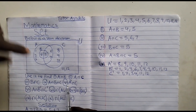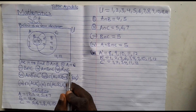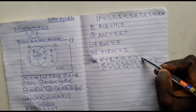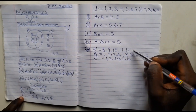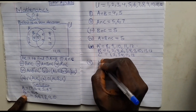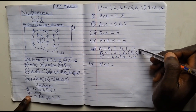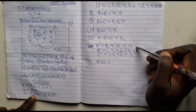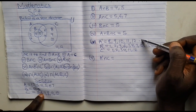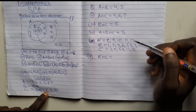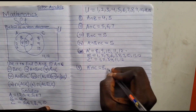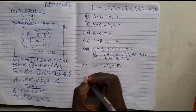Now let's answer question five: A prime intersect C. Note — this is not C prime; we are looking for A prime intersect C. What are those elements common in A prime and C? A prime = {8, 9, 10, 11, 12}, C = {5, 6, 7, 8, 9, 10}. Checking: 5 is in C but not in A prime; 6 is in C but not in A prime; 7 is in C but not in A prime; 8 is in both — yes; 9 and 10 are also in both. So A prime intersect C = {8, 9, 10}.